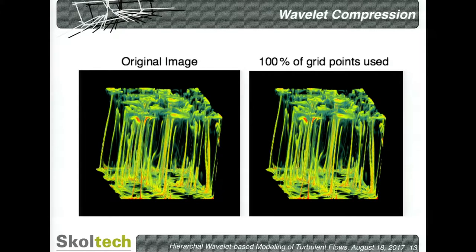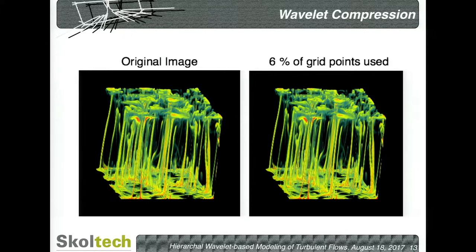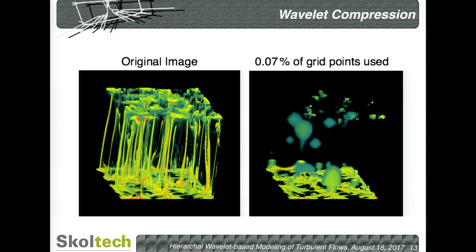For those unfamiliar with wavelets, here is a brief example about why they are good at image compression. On the left is the original image — related to Rayleigh-Taylor instability. On the right is a wavelet-compressed image. Using only one-fifth, basically 20%, of the wavelet coefficients, you don't see any difference — basically identical results. At 6% of coefficients, you still see only a small difference but practically still capture the field. Even at less than 1%, all major features are captured quite well. Only beyond that do you start losing the approximation.